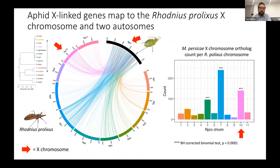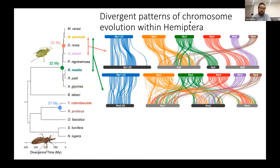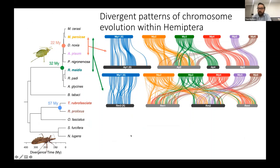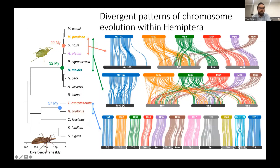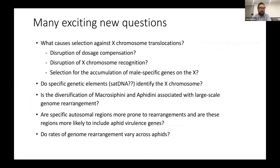Finally, we compared rearrangement rates. Within aphids, we see very high rates of autosomal rearrangement mapped to the phylogeny, but comparing to what's going on in other Hemipterans, we see very high synteny with very few rearrangements apart from a split in the X chromosome in Rhodnius. So this gives us many new exciting questions which we can ask about aphid genomes.